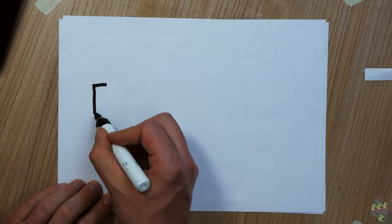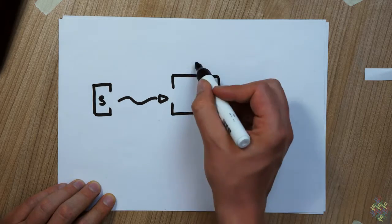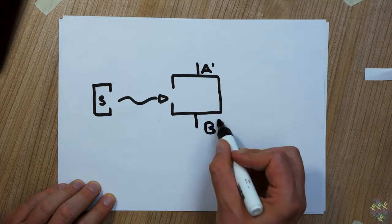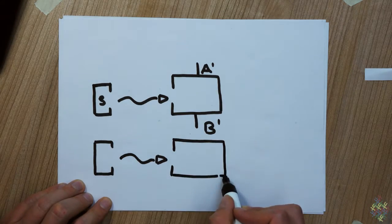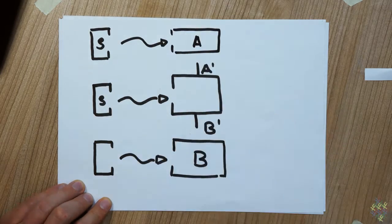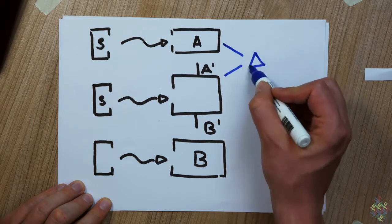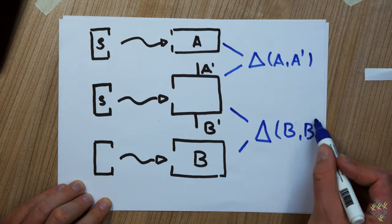So far, we discussed only preparation uncertainty. However, there is always a dual aspect called measurement uncertainty, which describes the errors when you try to measure two observables a and b jointly, that is, with the same apparatus. This also covers a scenario when you first measure a and then try to recover b. In that case, you will capture the trade-off between the accuracy of the a measurement and the disturbance on b.